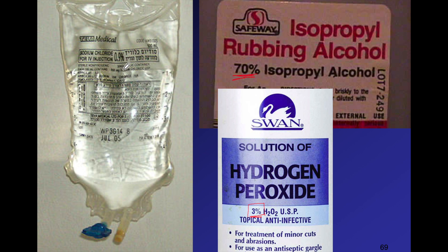If you look at an IV bag, it's a 0.9% saline solution — saline is salt, or sodium chloride. That means out of 100 grams, 0.9 grams is sodium chloride and 99.1 grams is water. You don't want it too much higher or lower than that; if the concentration is off, it can cause cells to either swell up or shrivel up due to osmosis — they're matching the salt concentration within your body.